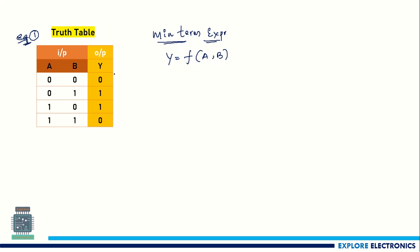So how to write the min term expression? The first thing is that we need to consider where y is 1. Here y is generated as 1 in two cases. So we need to consider what the inputs are in these two cases. In the first case, the inputs are 0 and 1. So the expression would be: when a is equal to 0, while writing the min term expression we are supposed to consider this 0 as a complement. So I am writing it as a-bar, and with this b is 1, so we write b as it is. Since we are writing the min term, we multiply these two. So this term is a-bar times b.